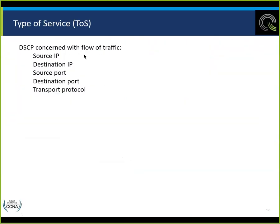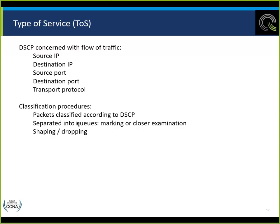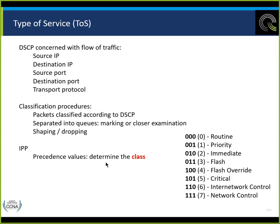The type of service is concerned with the flow of traffic: source destination IP, source port, destination port, and the transport protocol. Classification procedures: packages are classified according to the DSCP, separated into queues, and then marked for closer examination. We can have shaping or dropping. Shaping is when we buffer the information — used for devices that are insensitive to delay and jitter.